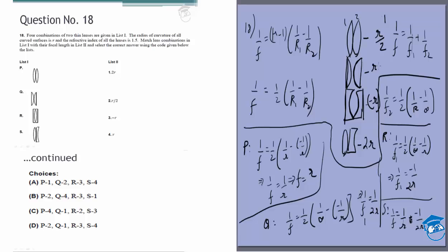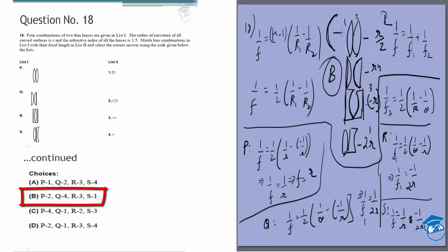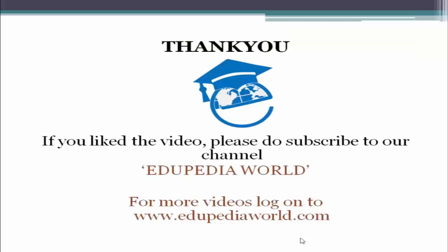So the results are: P→R/2 (option 1), Q→R (option 4), R→−R (option 3), S→2R (option 2), mapping to answer option B. This is quite a simple question but you must use the right signs: every surface curving to the right has a positive radius of curvature, and every surface curving to the left has a negative radius of curvature.